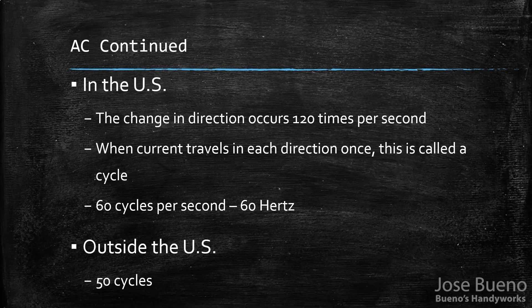For example, the current travels from negative to positive, stops, and then reverses from positive to negative — that is one cycle. So when the current changes directions 120 times per second, we divide by two and get 60 cycles per second, which we can also call 60 Hertz.